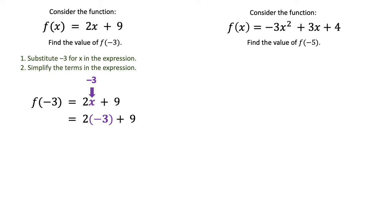So you would multiply 2 times -3 to get -6 plus 9, and then you would add the -6 plus 9. Those are opposite signs, so that's going to give you a positive 3. So f(-3) in this function gives you a positive 3 as a value.